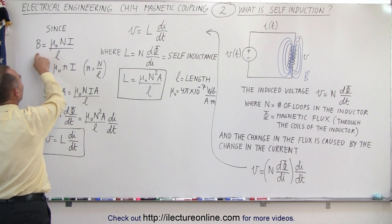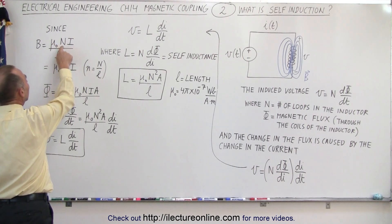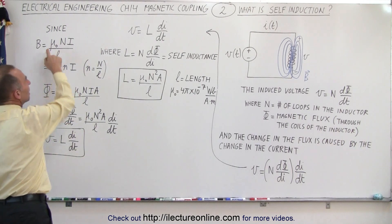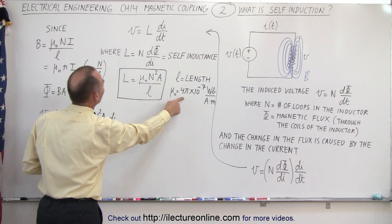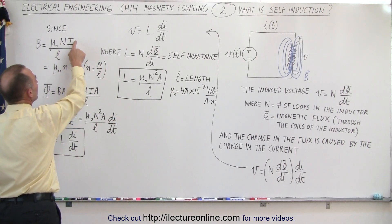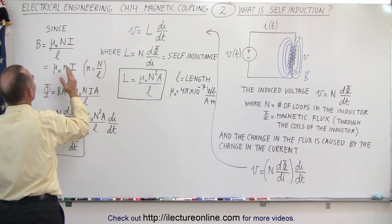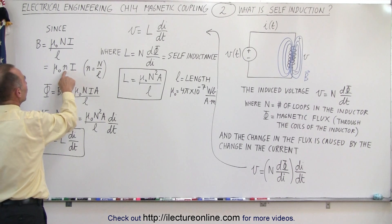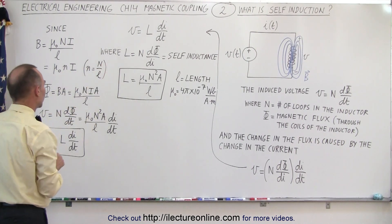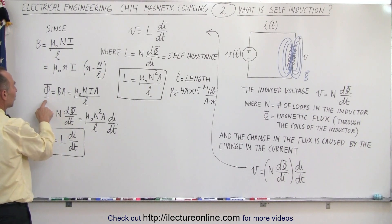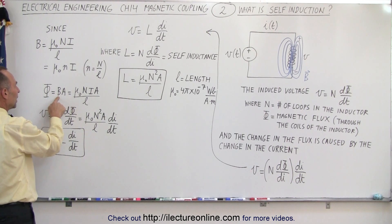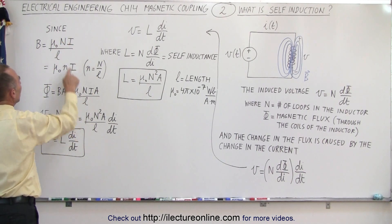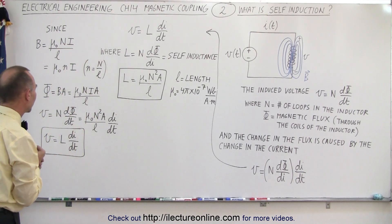We know that the B field — the magnetic field through a coil — is μ₀ times N times i divided by L. So we take the permeability of free space, multiply by the number of loops, multiply by the current divided by the length of the coil, and that gives us the B field. We can also write it as μ₀ times small n times i, where small n is the number of loops per unit length. The magnetic flux is equal to the strength of the magnetic field times the cross-sectional area, where B = μ₀Ni/L.